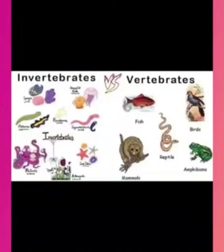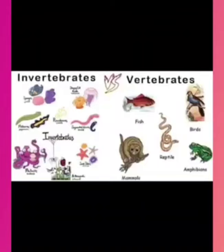All animals have different structures. So we classify them into vertebrates and invertebrates. Invertebrates are those animals which do not have a backbone. For example, starfish, butterfly, etc.